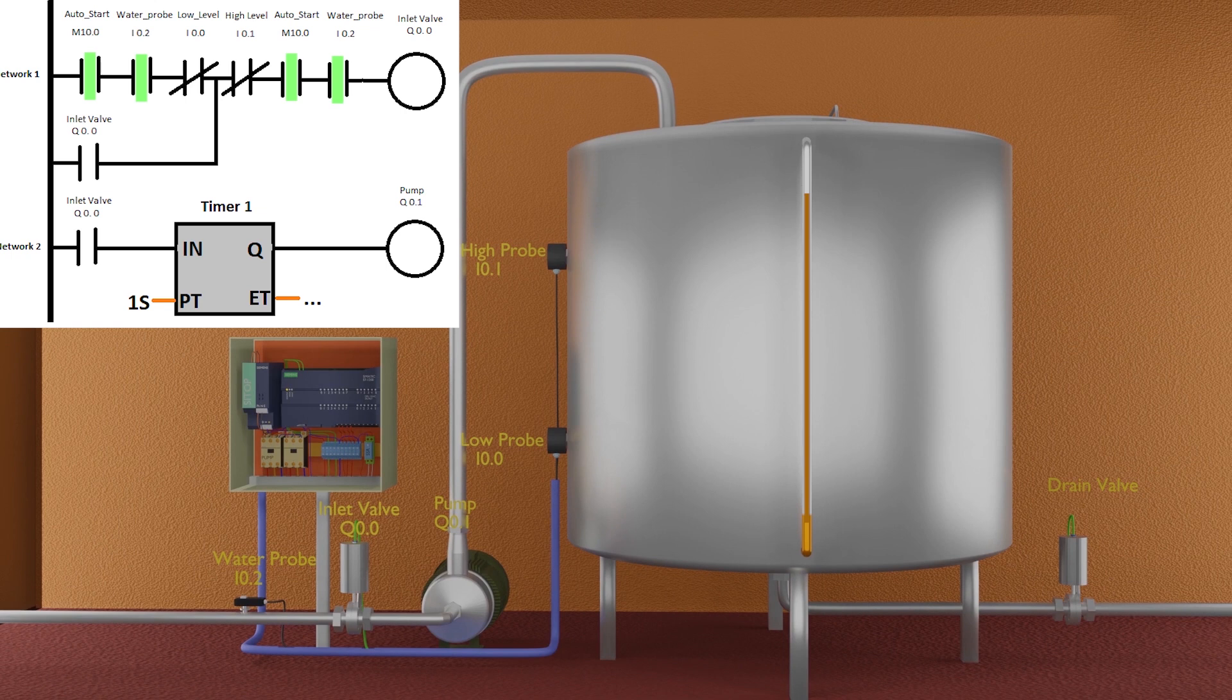Coming back to network 1, if at any time we disable the auto start bit M10.0 or there is no water in the inlet pipe, it will open the contact of water probe I0.2 and it will unlatch and turn off the inlet valve and pump.